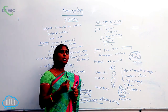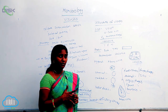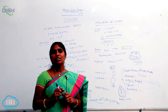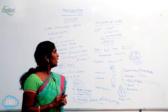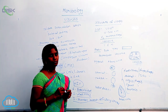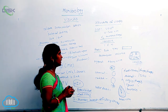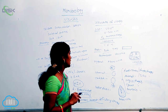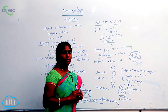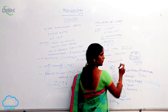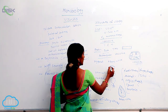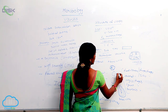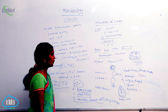Viruses are too small to be seen with a light microscope; they are visible only under a transmission electron microscope. Viruses show different shapes: rod shape — for example, TMV; rectangular shape — vaccinia virus; polygonal shape — adenovirus; spherical shape — poliovirus; and tadpole shape — T2 bacteriophages.